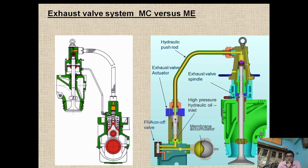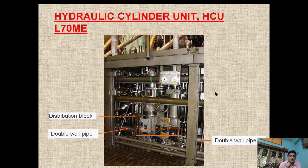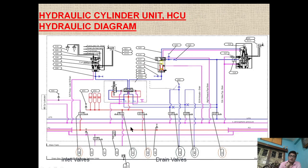There is also a modification in the exhaust valve design, which I have covered in a separate video on the differences between MC and ME engine exhaust valve series. As you can see, this is the distribution block, and this is the double-wall pipe. The servo oil is traveling at a pressure of 200 bar, so the pipe is double-walled and should have sufficient strength to prevent rupture even in extreme operation. This line diagram basically shows how fuel injection and exhaust valve actuation is carried out by the FIVA valve.